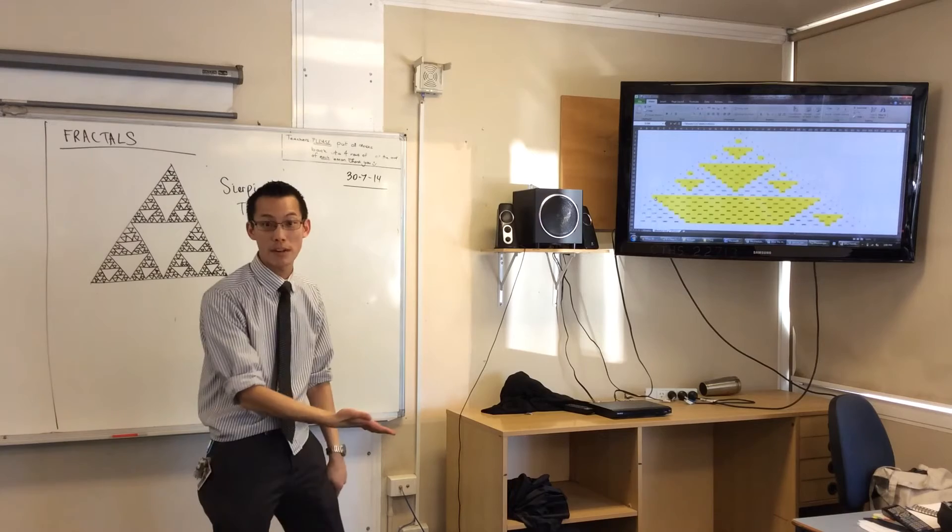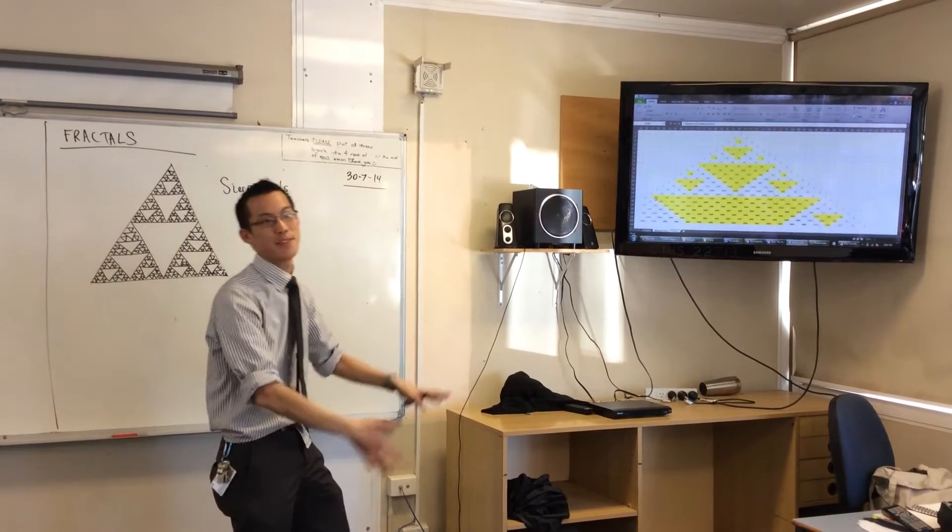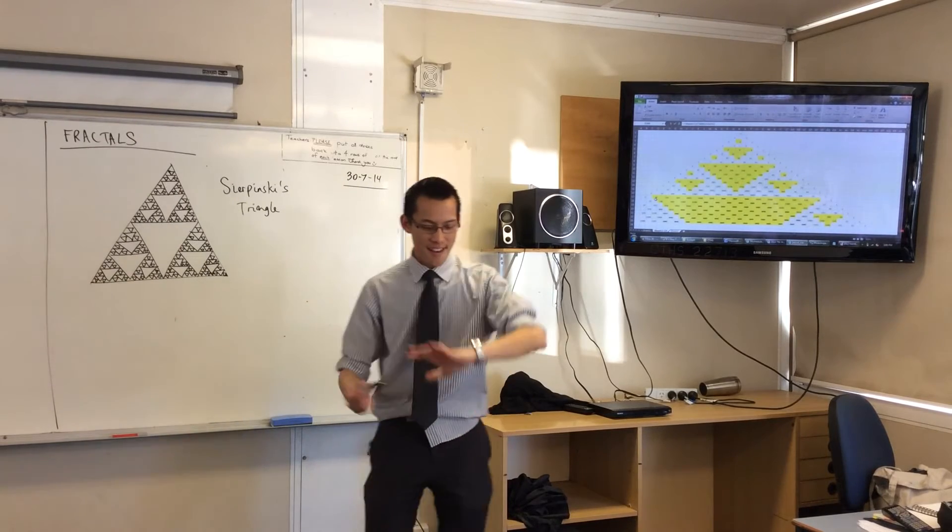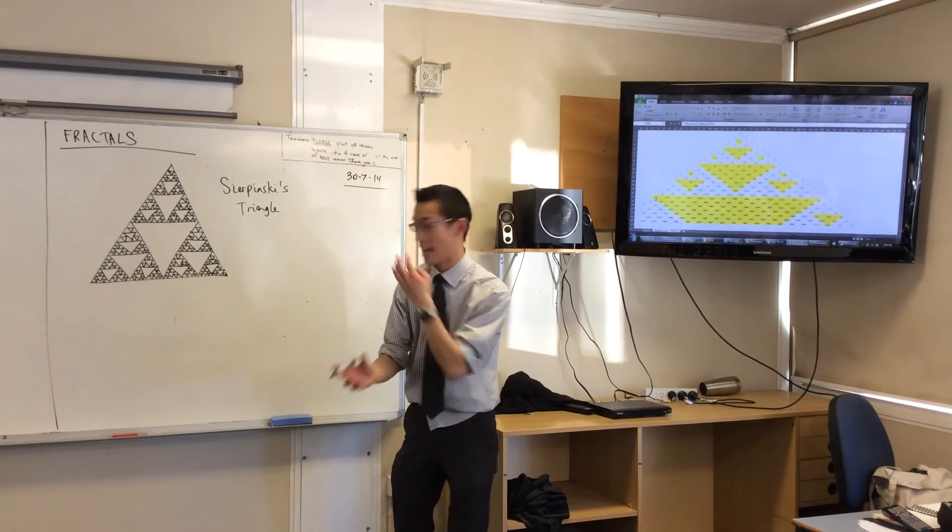You can try it for the multiples of three. You can try it for the multiples of four. You will get different versions of Sierpinski's Triangle, okay? Speed version, because I've got like four minutes. The other two fractals, I want to tell you what their names were.